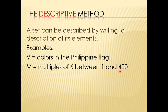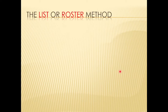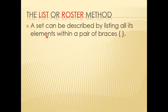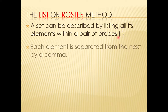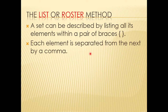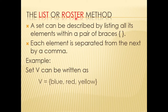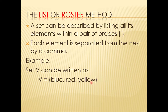Let's now move on to the second method, the list or roster method. When we say roster method, it is a set described by listing all its elements or members within a pair of braces, with each element separated from the next by a comma. For example, set V — the colors of the Philippine flag — can be written as V equals blue, red, yellow, enclosed within a pair of braces.